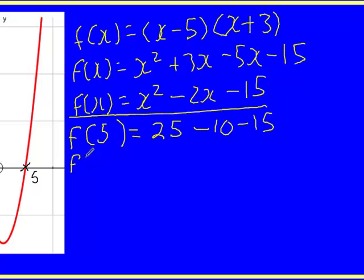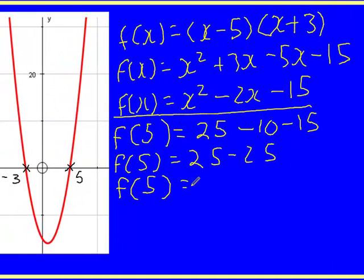Tidying this up, I get 25 take away 25. What we've found is that when I evaluate f(5), I actually get 0, and in a nutshell, that is what the factor theorem is.